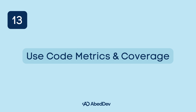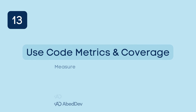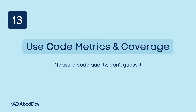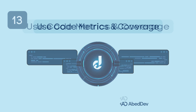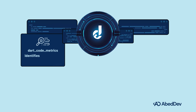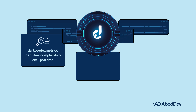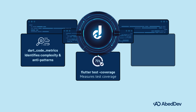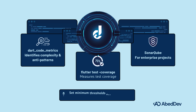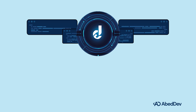Use code metrics and coverage. Measure code quality — don't guess it. Recommended tools: Dart Code Metrics identifies complexity and anti-patterns. Flutter test coverage measures test coverage. SonarQube for enterprise projects. Set a minimum threshold for code coverage in your CI/CD pipelines.